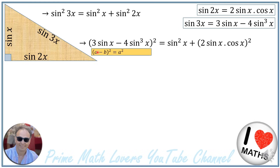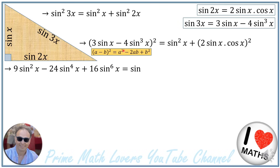From algebra, (a minus b) squared equals a squared minus 2ab plus b squared. Expanding the left side: 9 sine squared of x minus 24 sine to the power of 4x plus 16 sine to the power of 6x. The right side gives sine squared of x plus 4 sine squared of x times cosine squared of x.